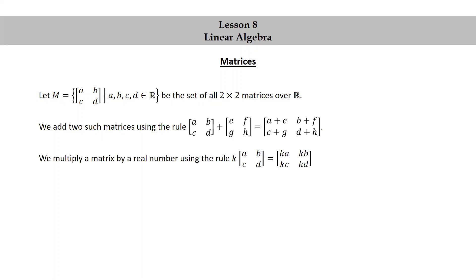We multiply a matrix by a real number using the rule: k times [A, B; C, D] equals [kA, kB; kC, kD]. This type of multiplication is called scalar multiplication.